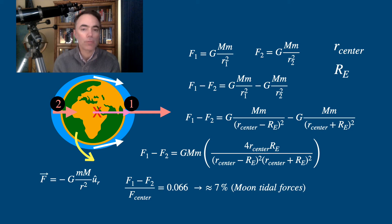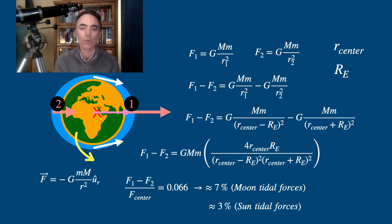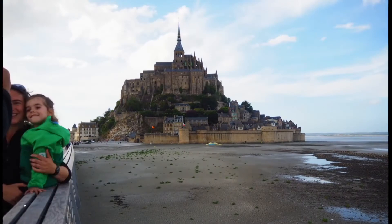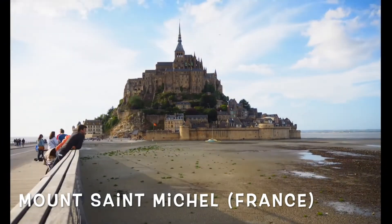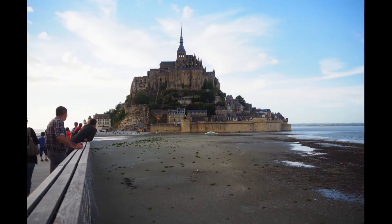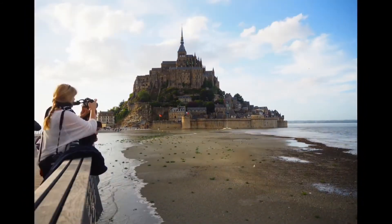This happens also for the Sun. The star also induces tidal forces on the oceans of the Earth — these are about 3%. These tidal forces are clearly observable with liquids like the water in the oceans. Look at this example of Mont Saint-Michel in France, a sort of island, as it is an island half of the day and a peninsula the other half.